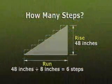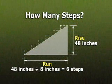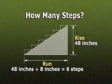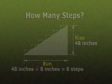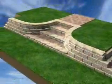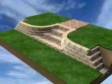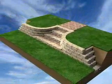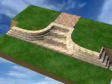Before you begin, you must determine how many steps you will need. Measure the total rise of your slope in inches and divide by 8, which is the height of the block. Be sure to factor in any code requirements before you prep the site. In this example, we will show you how to build stairs into a wall using flowing curves.